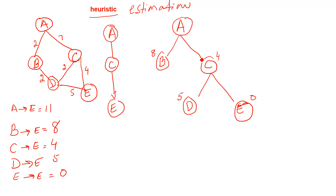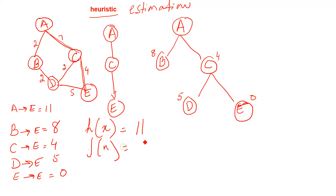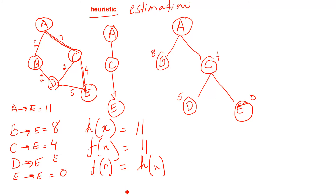Our route is from A to C, and then C to E. Notice something interesting: the heuristic cost from A to E is 11, and our actual cost F(N) is also 11 — from A to C is 7 and C to E is 4, totaling 11. The actual cost and the heuristic cost are equal. When they are equal, this is the optimal solution.